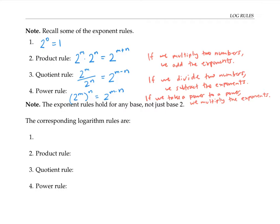Each of these exponent rules can be rewritten as a log rule. The first rule, two to the zero equals one, can be rewritten in terms of logs as log base two of one equals zero. The second rule, the product rule, can be rewritten in terms of logs by saying log of x times y equals log of x plus log of y.